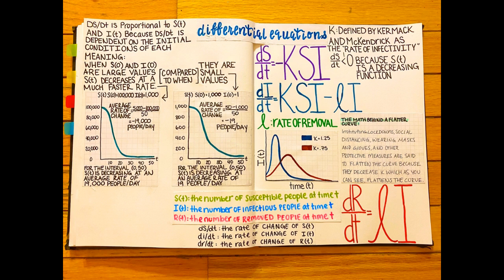The final equation, dr/dt, equals positive l times i because r(t) increases at the same rate i(t) decreases as people are removed.